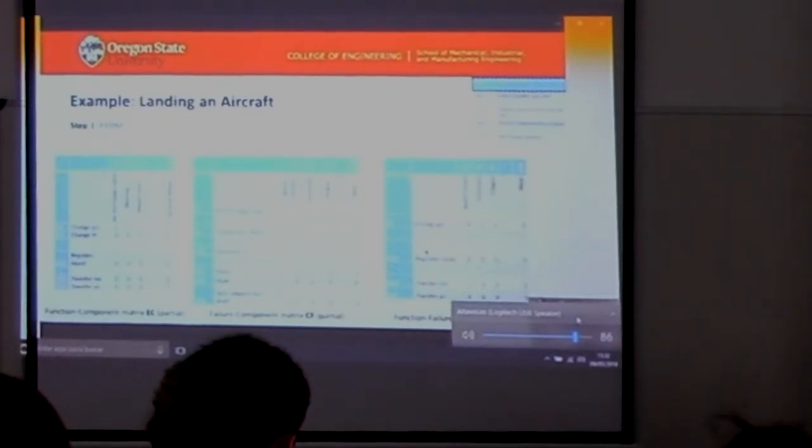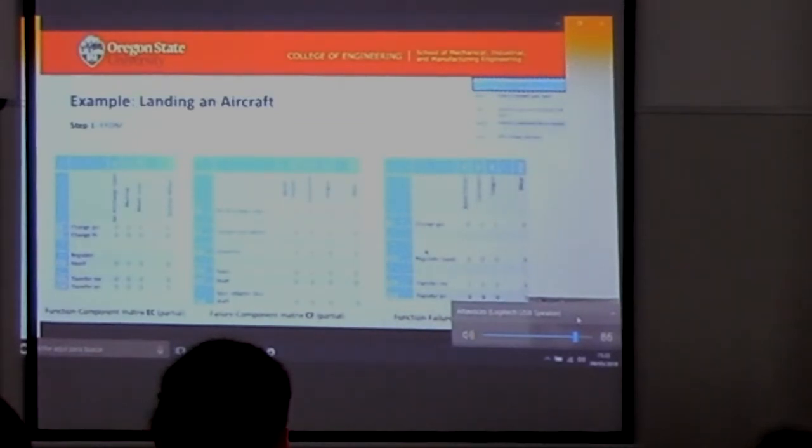Similarly, we have failure component metrics. Now we are looking for how these failures occur with the components, and then we have function failure metrics. Basically, how these functions affect failure modes. And then depending on the accident recreation, designers or engineers fill these numbers, so they associate functions, components, and ultimately functions to failures.